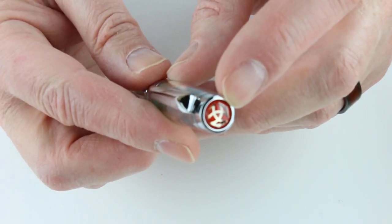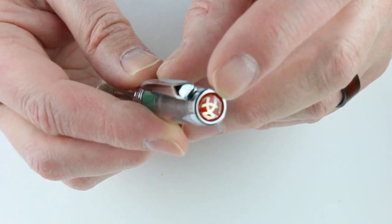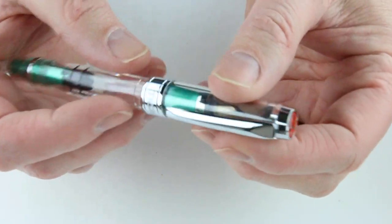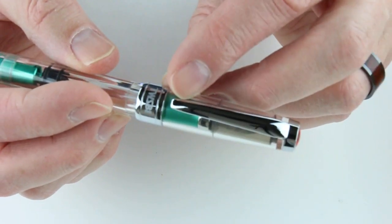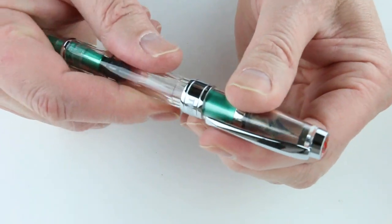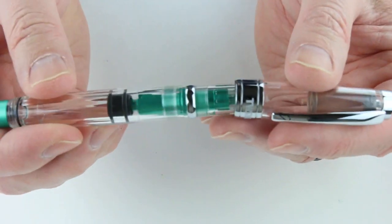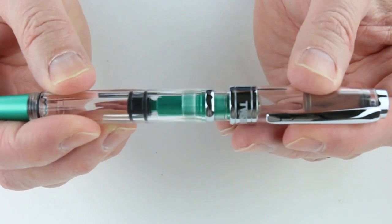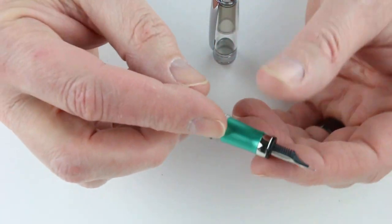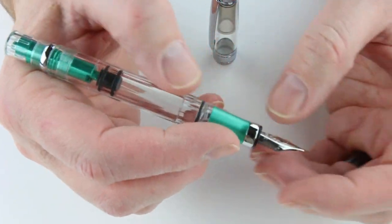There's a medallion on the cap top with the TWSBI logo in red and a silver ring with the clip. It's a threaded cap that unscrews and posts on the back, but it barely sits there and it's a good size pen, so you don't necessarily need to post it.